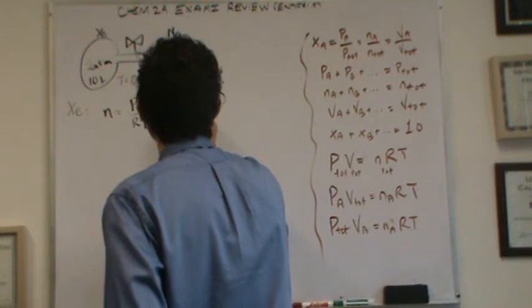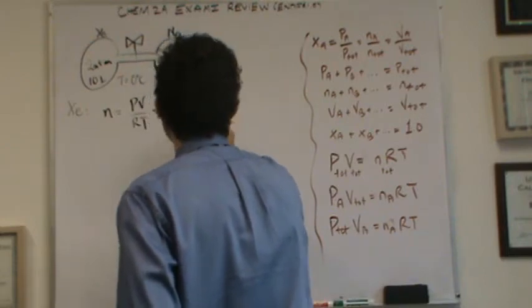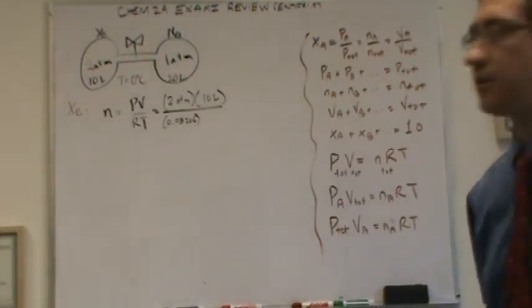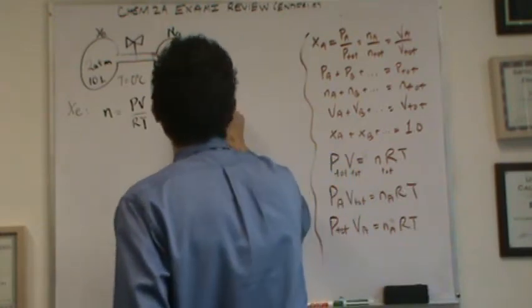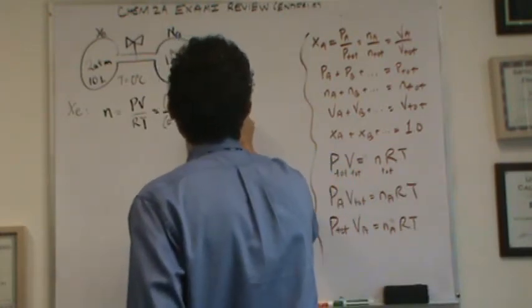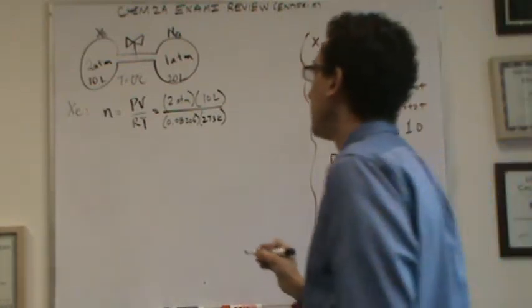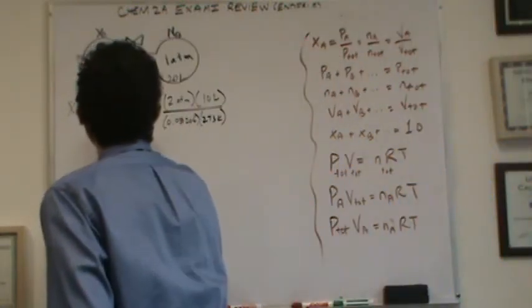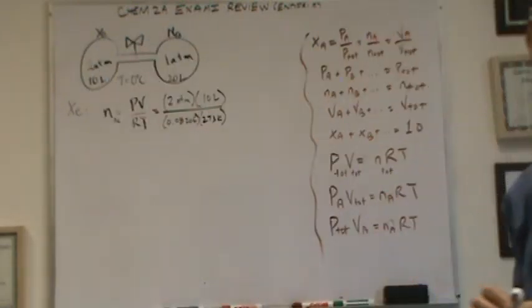R, because we're using the ideal gas law, this is the only point we're going to use this 0.08206 R, otherwise we'll always use the other R. And then 0 plus 273 is 273 Kelvin for the temperature. And this will be the moles of xenon.